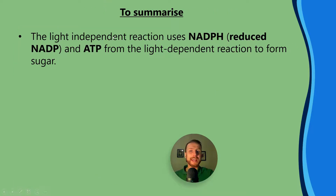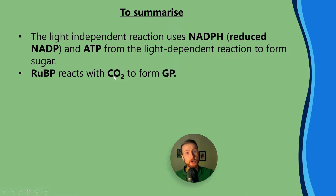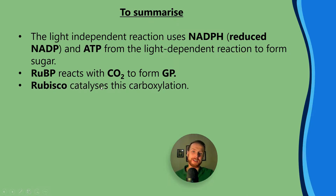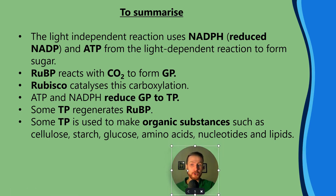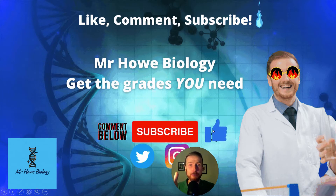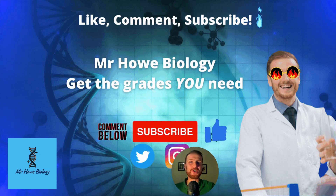To summarize: the light independent reaction uses NADPH, also known as reduced NADP, and ATP from the light dependent reaction. RUBP reacts with CO2 to form GP — Rubisco catalyzes this carboxylation, and as an enzyme, temperature, substrate concentration, and pH all affect the rate of reaction. ATP and NADPH reduce GP to TP. Some TP regenerates RUBP — the majority of it. Some TP is used to make organic substances such as cellulose, starch, glucose, amino acids, nucleotides, lipids, etc. I hope this video helped you guys — let me know in the comments what you want to see next. I want to help you smash these exams. See you in the next one.